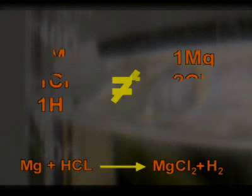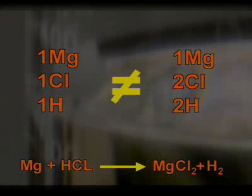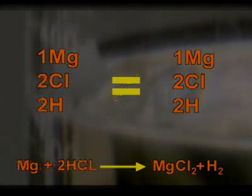Chemical equations must balance, meaning the same number of atoms should be on each side of the equation. This chemical equation does not balance. On the right side of the equation is one magnesium atom, two chlorine atoms, and two hydrogen atoms. The proper equation should have two molecules of hydrochloric acid, which makes the equation balance.